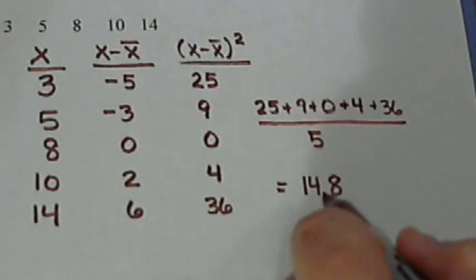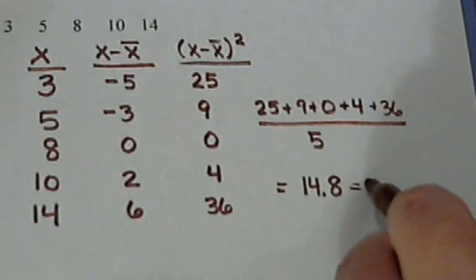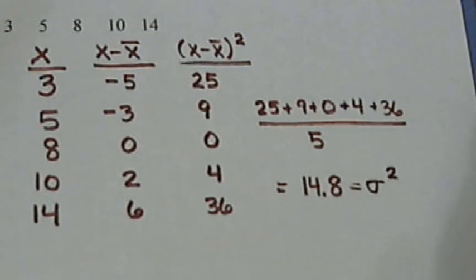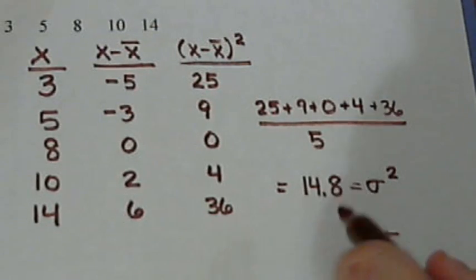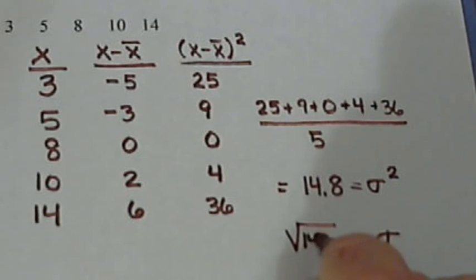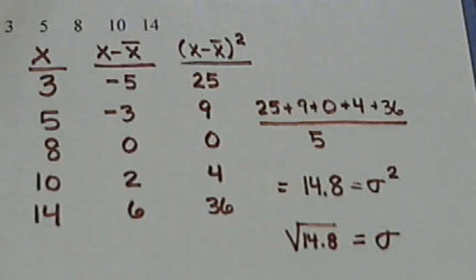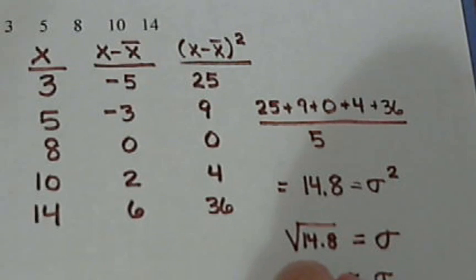And this is called the variance. This is our standard deviation squared. But to get just the standard deviation, we need to take the square root of our 14.8. So, for this list of numbers, our standard deviation is approximately 3.8.